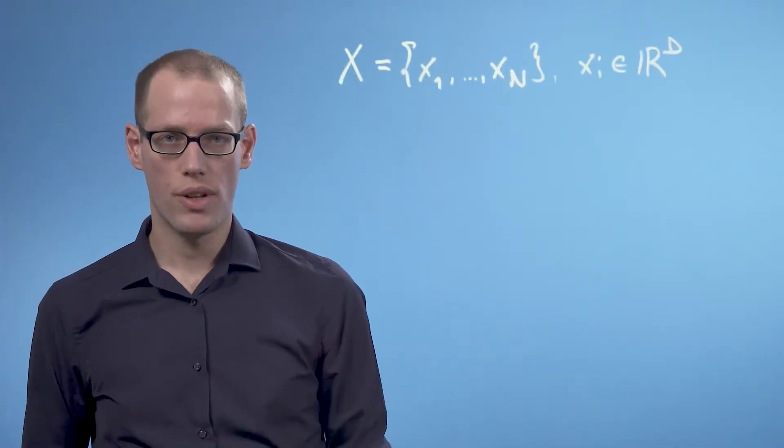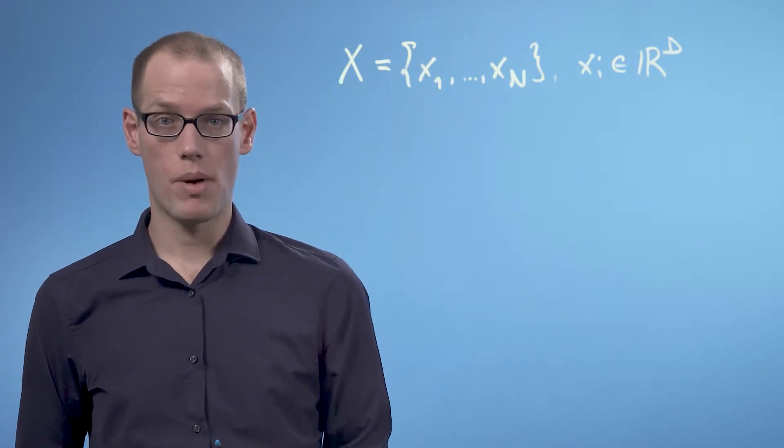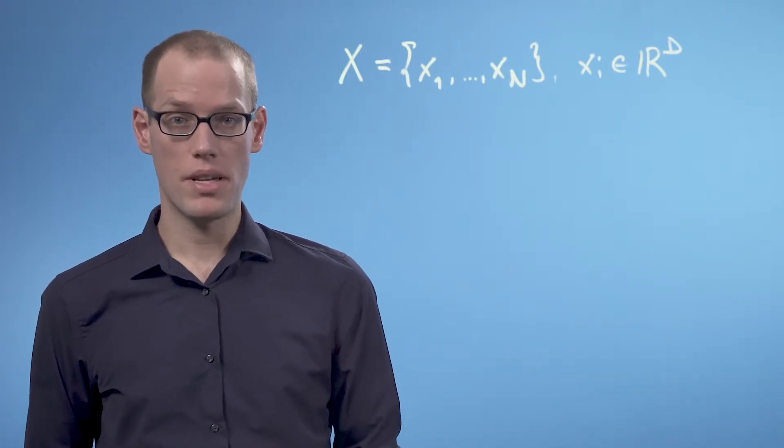Before we start, let's briefly review three important concepts. The first one is that every vector in R^d can be represented as a linear combination of the basis vectors.